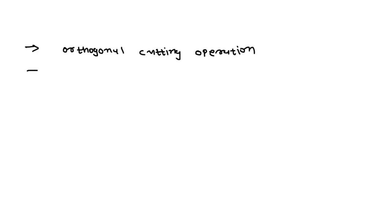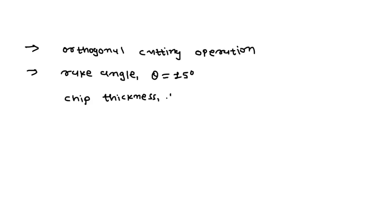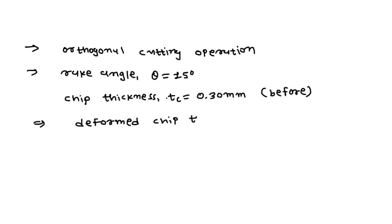In this question we are given an orthogonal cutting operation. The rake angle alpha is equal to 15 degrees. The chip thickness before the cut, t0, is equal to 0.30 millimeter. After cutting, the deformed chip thickness, tc prime, is equal to 0.65 millimeter.